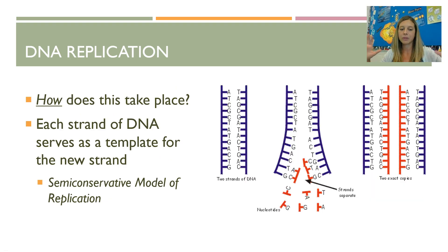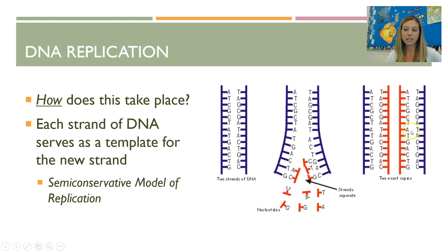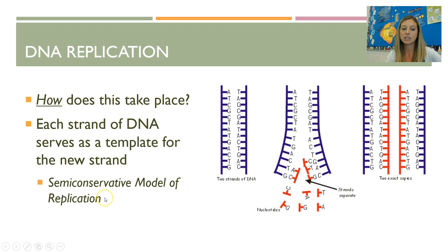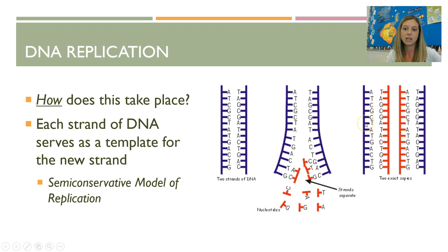Here's the big picture of DNA replication. Each strand of DNA serves as a blueprint or template for the new strand, so by the end of replication you end up with two molecules of DNA. Each has an original parent strand and a newly built strand. We call this the semi-conservative model of replication — 'semi' meaning somewhat, 'conserved' meaning kept. Half is the old parent strand and half is the newly built strand.